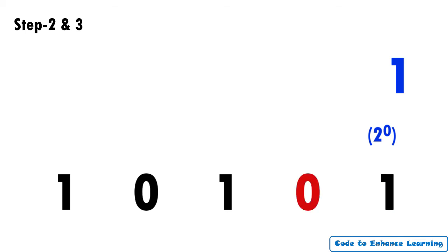Next, we will move to the next bit which is 0. We will assign the next power of 2 which is 1, and 2 power 1 equal to 2. We will write this value 2 above the binary bit 0. Next bit is 1. We will assign 2 power 2 equal to 4 and write it above the binary bit 1.